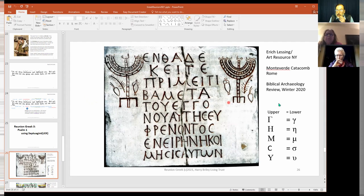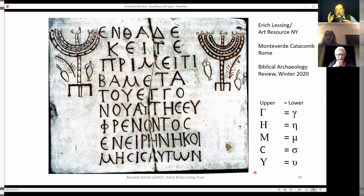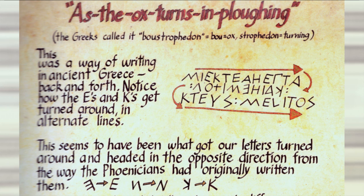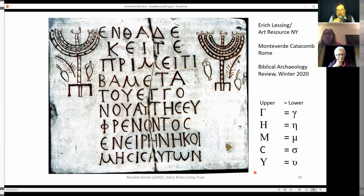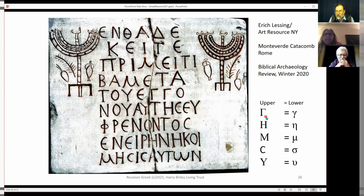This was in Biblical Archaeological Review, their Winter 2020 issue. I showed you an example of boustrophedon script going down like an ox plowing a field, going left to right. This one is not that bad but it still has all capitals, no spaces, and the words are cut — like 'oh I ran out of marble, I'll continue the word on the next line.'